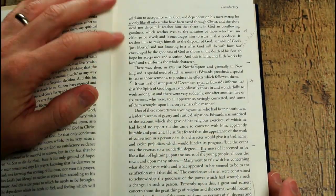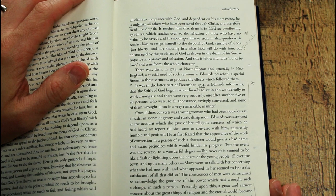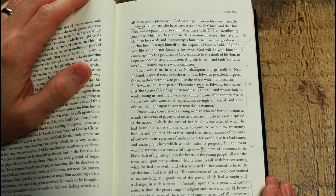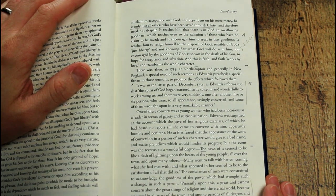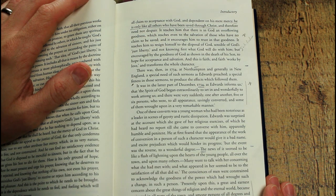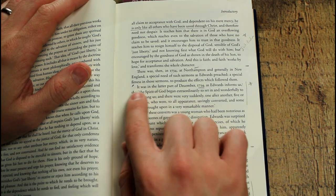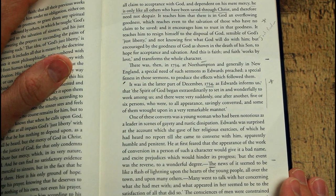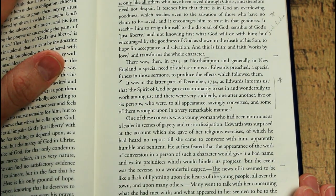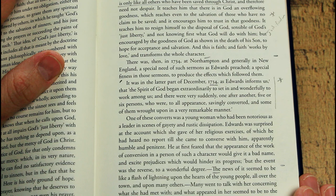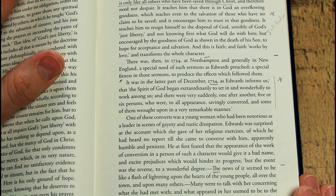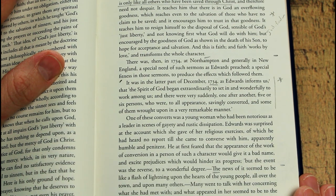So let me just turn to one of the first sections of the book. I want to read to you to give you a flavor for Tracy's writing. He's talking about the beginning of the Great Awakening, which happened in Northampton, as we'll read in 1734. He writes, it was in the latter part of December of 1734, as Edwards informs us, that the spirit of God began extraordinarily to set in and wonderfully to work among us.